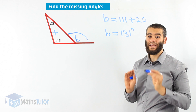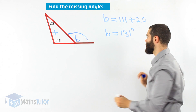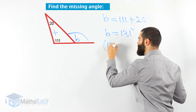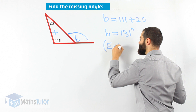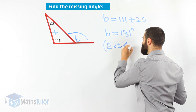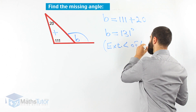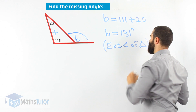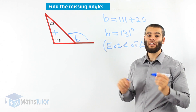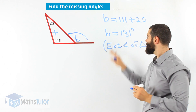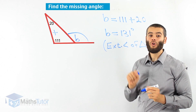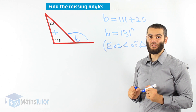Again, we write our reason: it is the exterior angle of a triangle. Exterior angle of a triangle is our reason — this is our answer. We'll get full marks.